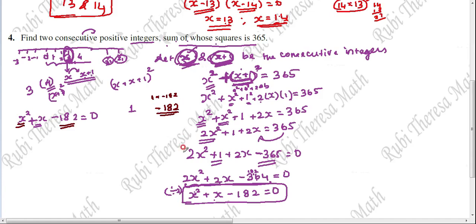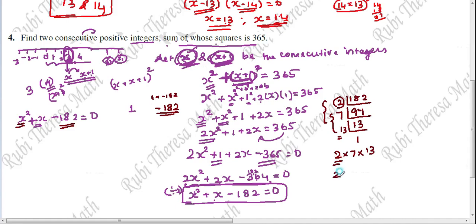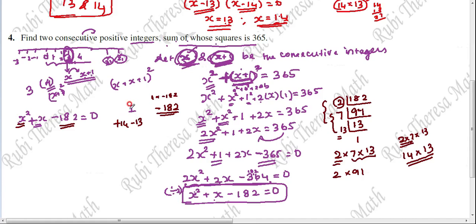Now solve by factorization. The middle term is plus X, so we need factors of 1 into minus 182 equals minus 182 that add to plus 1. Factorizing 182: 2 into 91, 7 into 13, so 2 into 7 into 13 gives factor pair 14 and 13. Since 14 minus 13 equals 1, we choose plus 14 and minus 13. Plus 14 minus 13 equals plus 1, and minus 14 into 13 equals minus 182. So the split is correct.